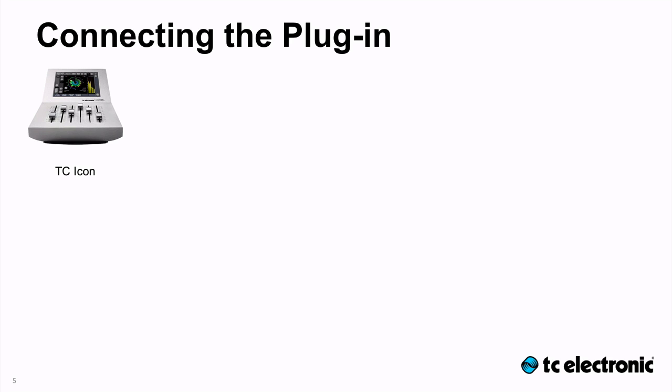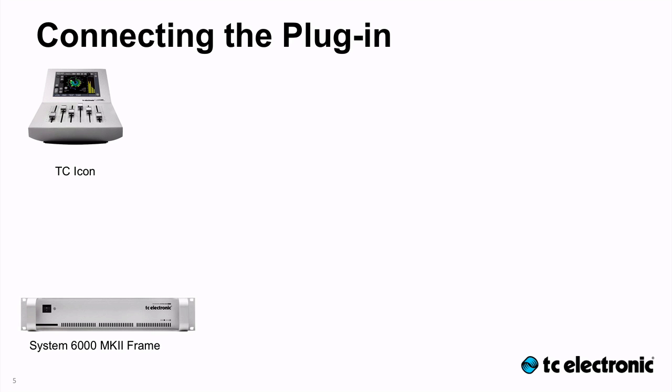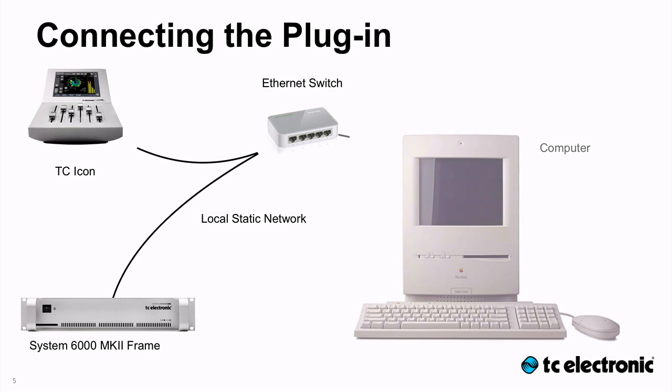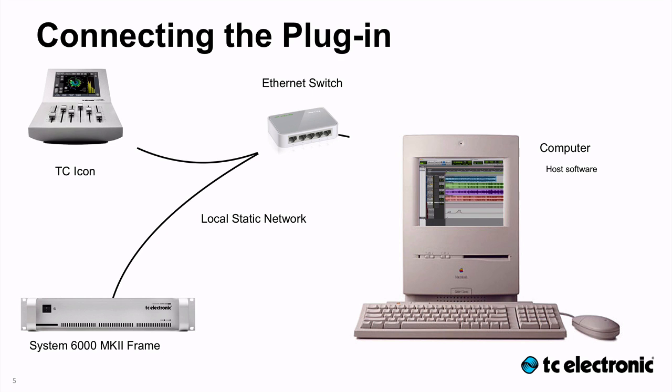For the tutorials here, I have a setup consisting of a TC Icon and of course a System 6000 Mk2 frame. I've connected those two to an Ethernet switch, forming a local static network. And I also have a computer that runs my host software, which in this case is Pro Tools. It of course runs the System 6000 Integrator plugin, and it also runs the software icon, so I can show you that the changes I made with the plugin are reflected in the icon.